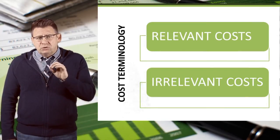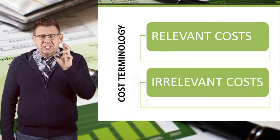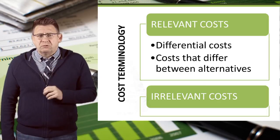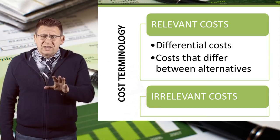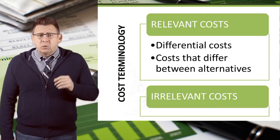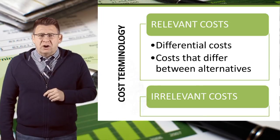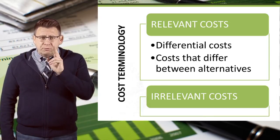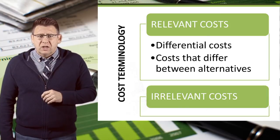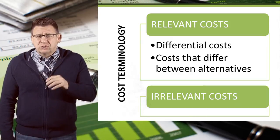Next, let's look at two cost terms we need to understand: relevant versus irrelevant costs. Relevant costs are important to decision making — they are costs that differ between alternative choices. An example would be the price of a new car. If you were choosing to buy a new car and the prices were not all the same, then the price of the car would be relevant to the decision. Cost differences between the new cars are known as differential costs.